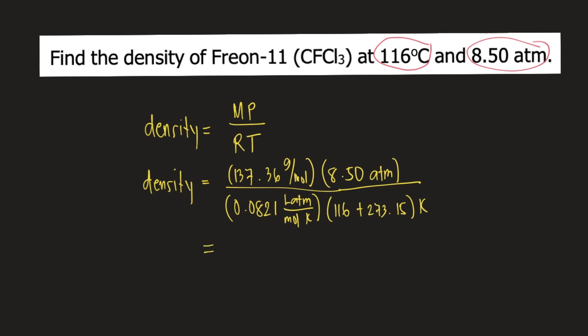So let's check how the units will cancel out. Moles will cancel, ATM will cancel, and Kelvin will cancel. So the unit for density would be grams per liter or grams over liter, G over L.